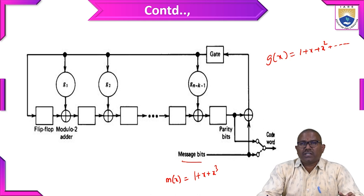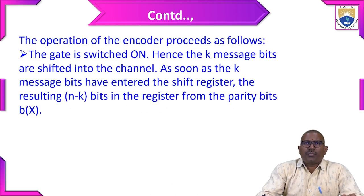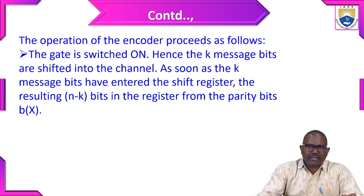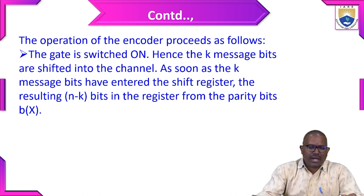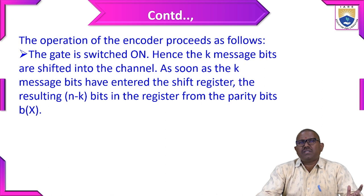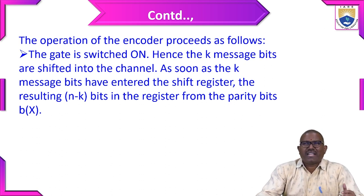The operation of the encoder proceeds as follows. The gate is switched on, so the k message bits are shifted into the channel. As soon as the k message bits have entered the shift register, the resulting n minus k bits in the register form the parity bits b(x). Both in block codes and cyclic codes we are going to add n minus k parity bits to the k message bits.